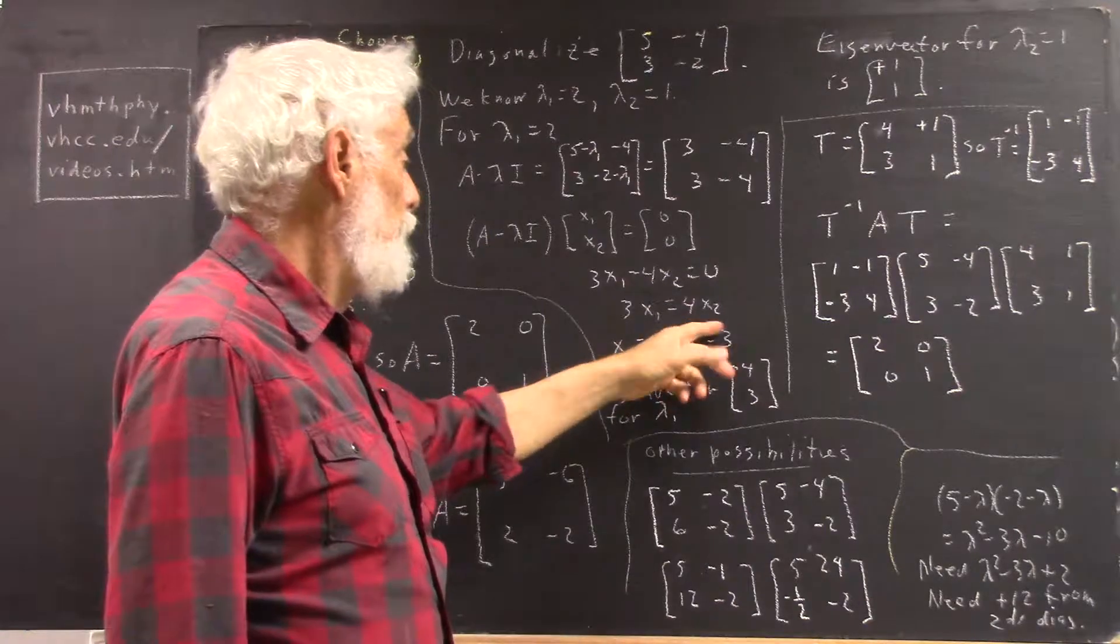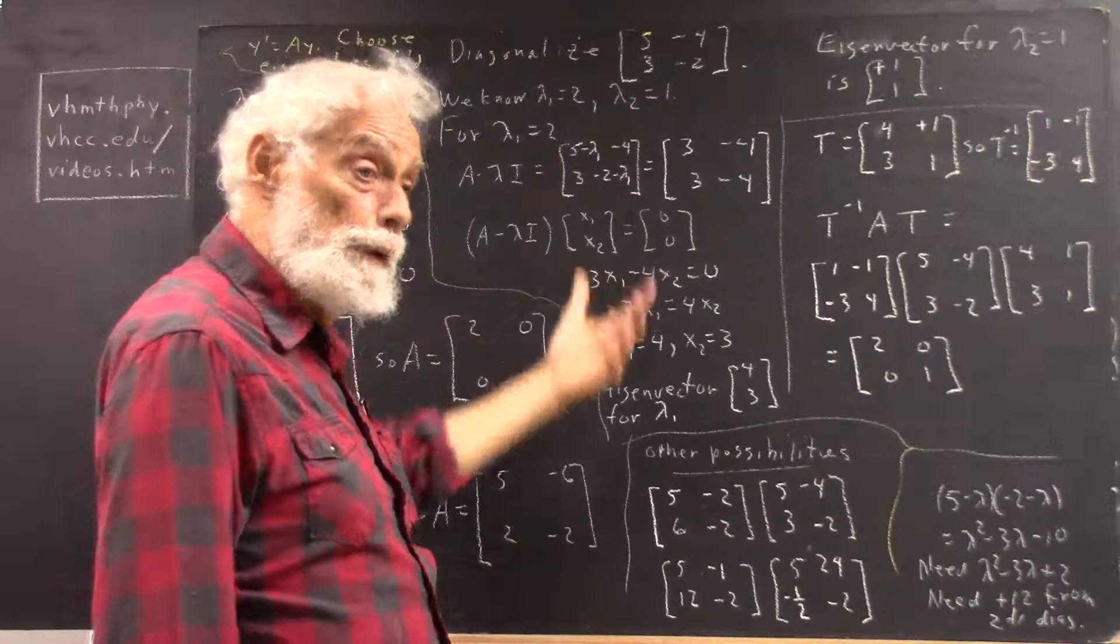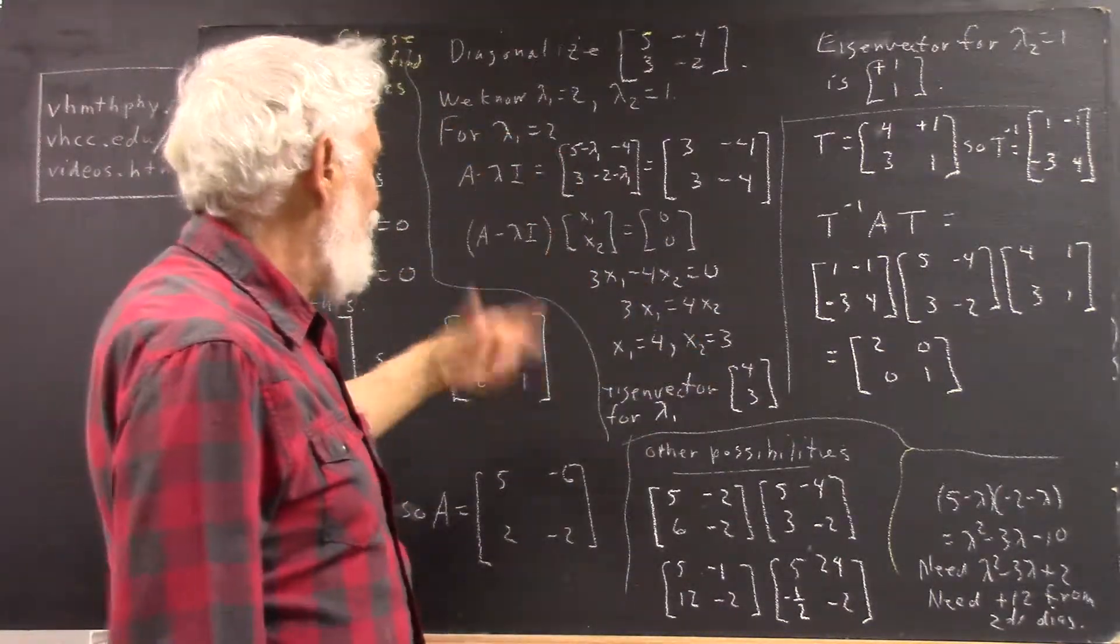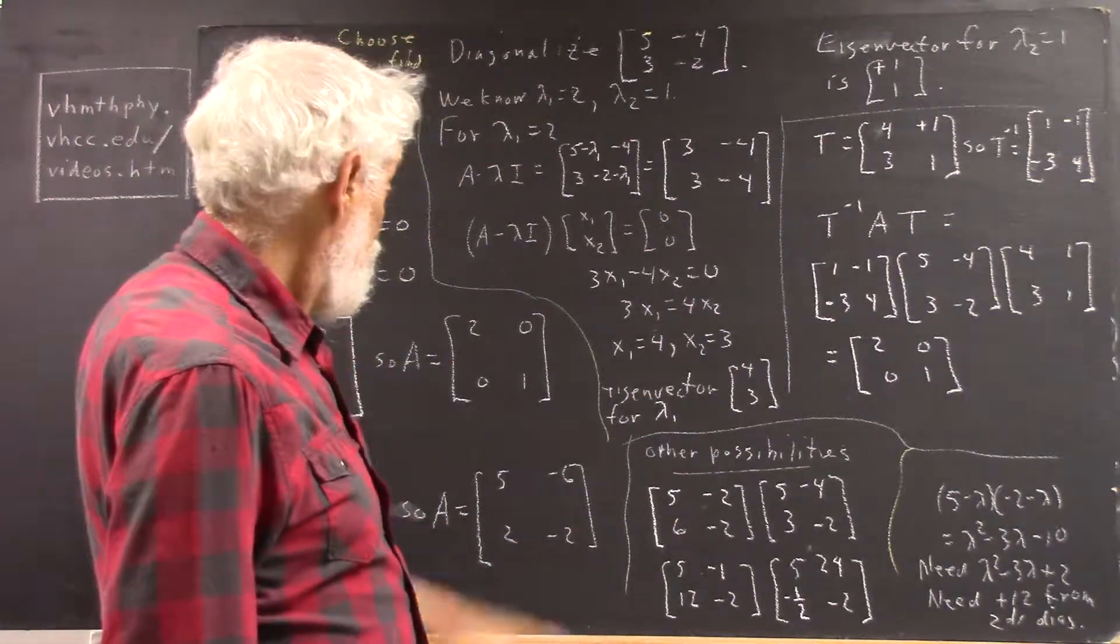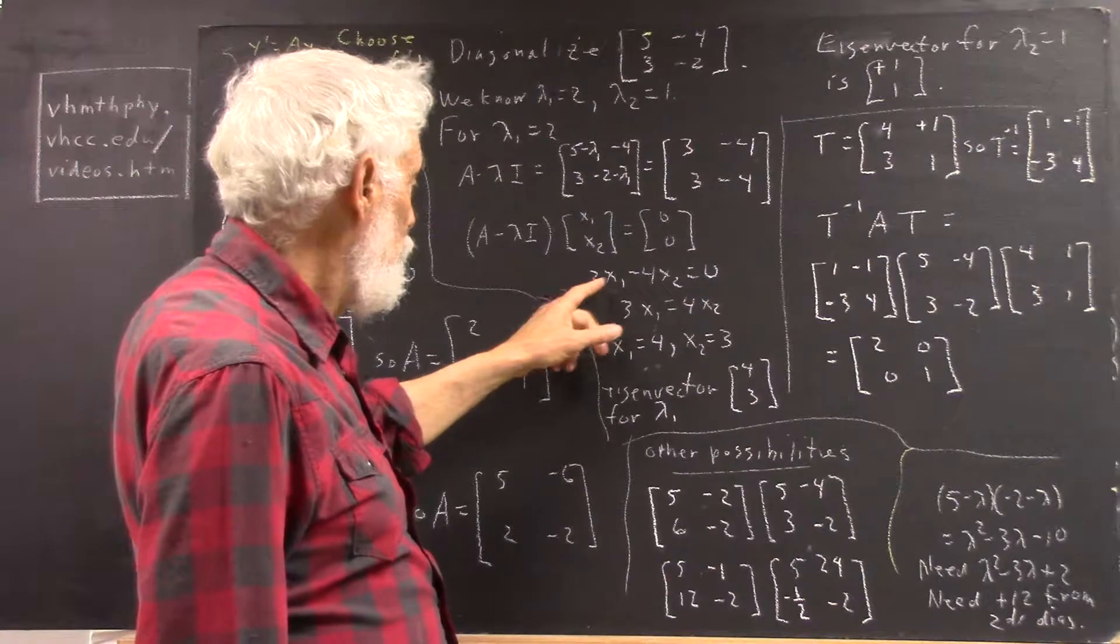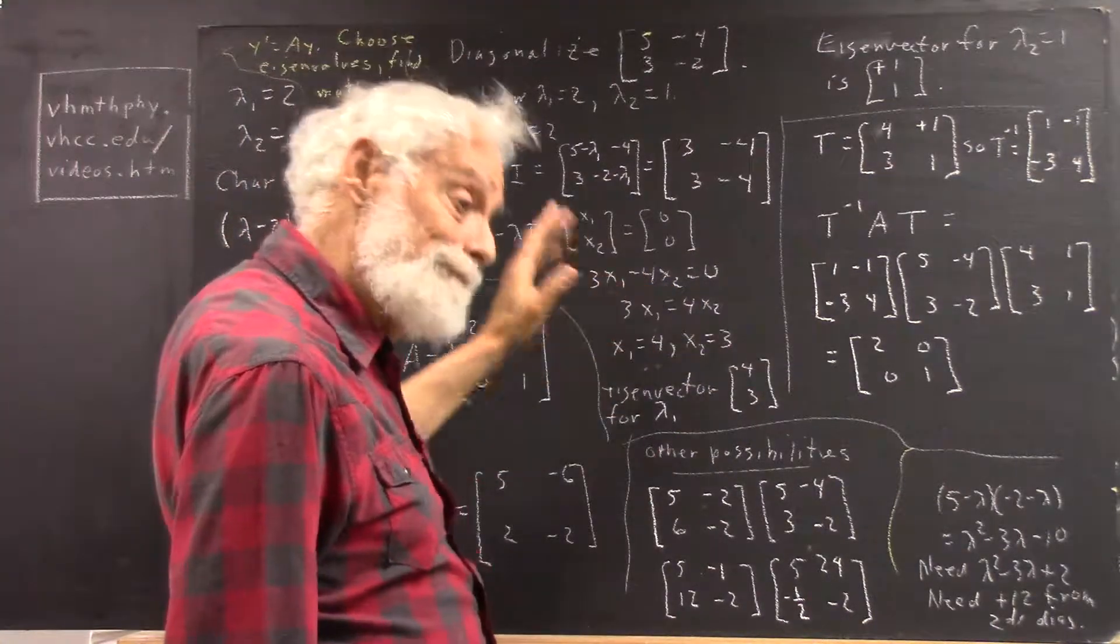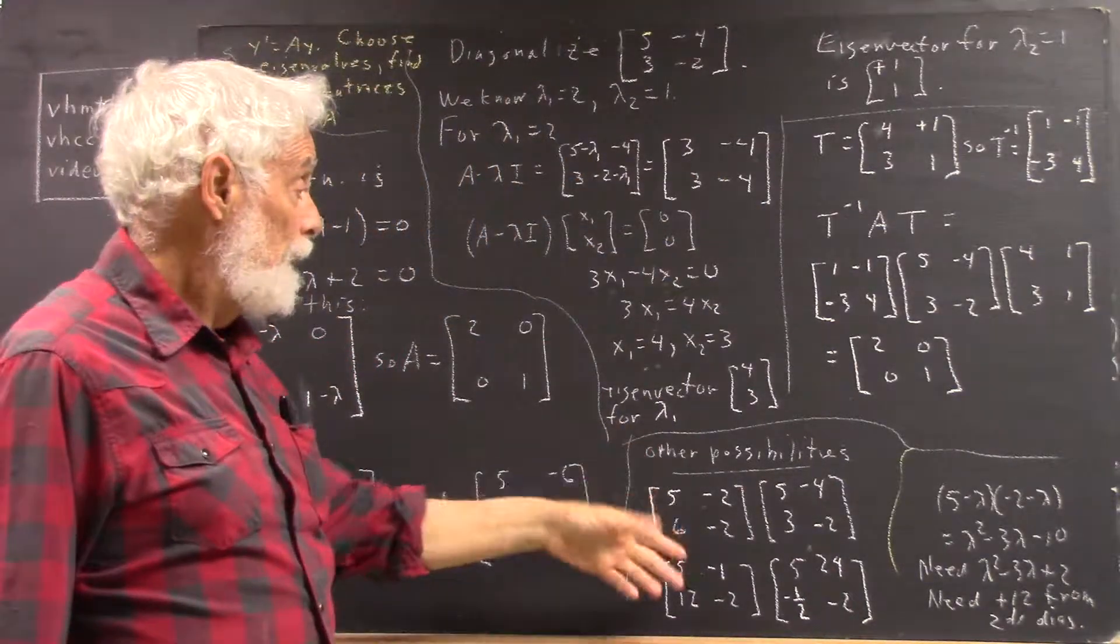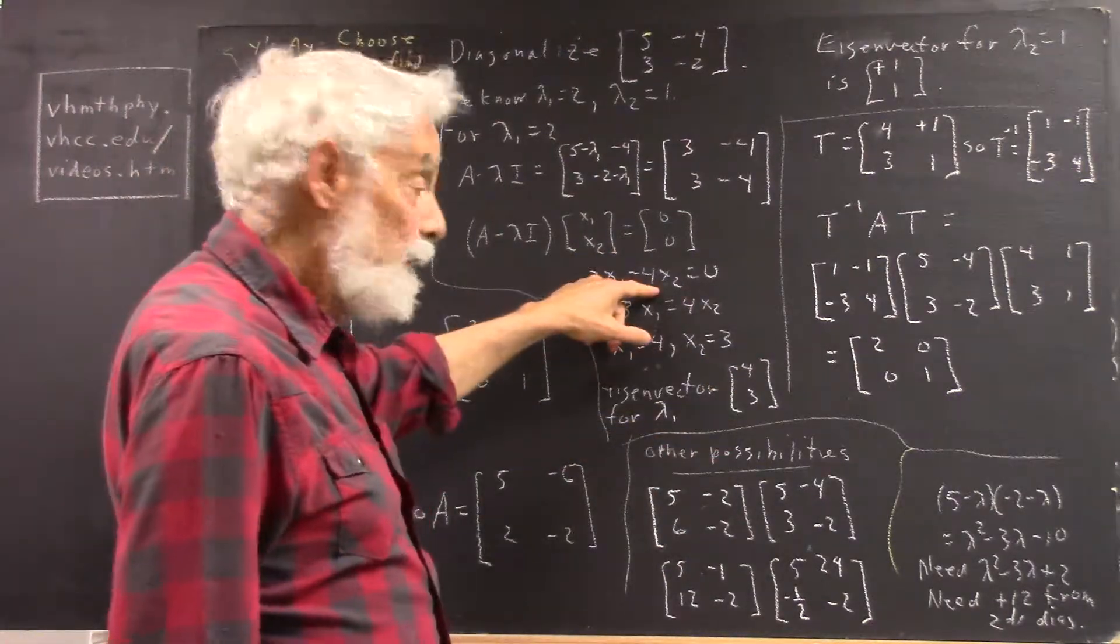From this equation we get 3X1 minus 4X2 equals 0. Now, we could solve. Do 3X1 equals 4X2. X1 equals 4 thirds X2. Let X2 equal 1. X2 will be... X2 equal 1. X1 will be 4 thirds. That's actually too much trouble. I just do this. Let X1 be 4, X2 equal 3. Why does that work? Well, put 4 in here, you get 3 times 4. Put 3 in here, you get negative 4 times 3. 3 times 4 minus 4 times 3 is 0. Any way you get it, by hook or by crook, any way you can get two numbers that satisfy this equation, that's going to be an eigenvalue.